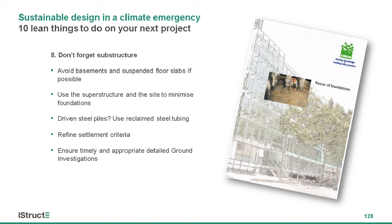Number eight: don't forget substructure. Try and avoid basements and suspended floor slabs if possible. Use your superstructure and the site to minimize foundations — if the site is really soft ground, can you have a much lighter superstructure, going down a steel or timber route? Can you use driven steel piles? Potentially look to use reclaimed steel tubing from the oil and gas industry. Try and refine your settlement criteria where possible. And really push for timely and appropriate detailed ground investigations — you want the most information about your ground before you design so you can minimize the material going into it.